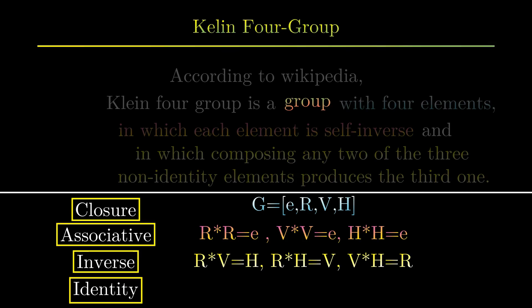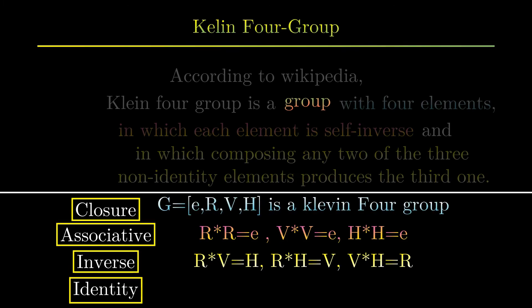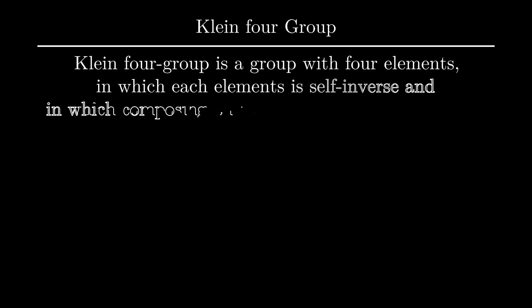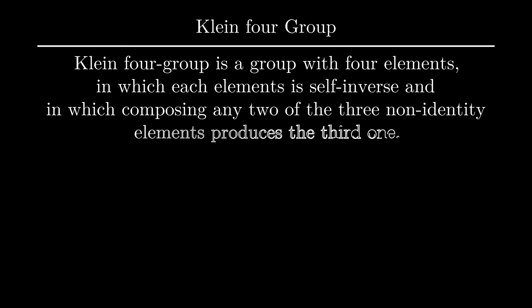With all this explanation, G is the Klein Four Group. I hope you now have a clear idea about the Klein Four Group — you can now read the definition and you will get the exact meaning. Thanks for watching, and catch you guys later in the next video. Until then, stay safe and curious. Bye!